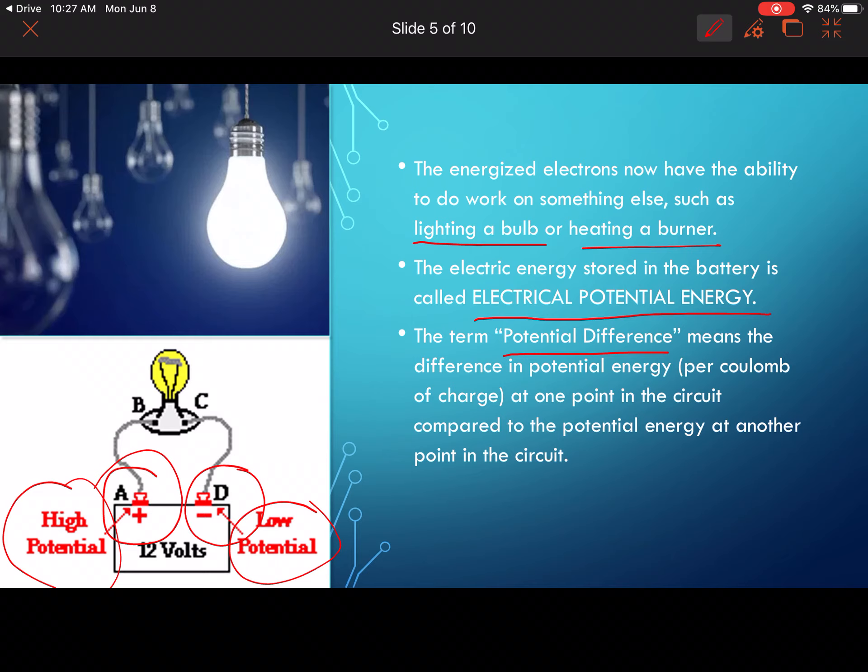The term potential difference also means the difference in potential energy per coulomb of charge at one point in the circuit compared to the potential energy at another point in the circuit. So if we look here, this positive end has high potential, this negative end has low potential, and the difference between those - now remember, in math when you talk about the word difference, that is subtraction. So if I took the high potential and I subtracted the low potential, that is called the potential difference. This is also known as our voltage.